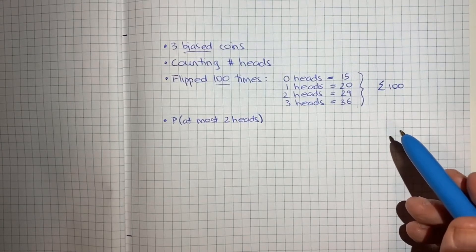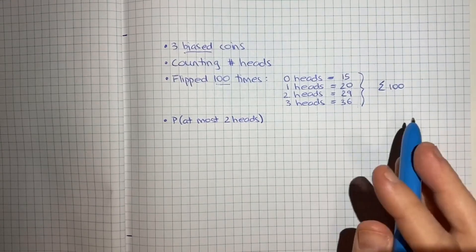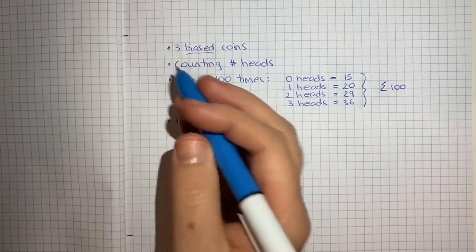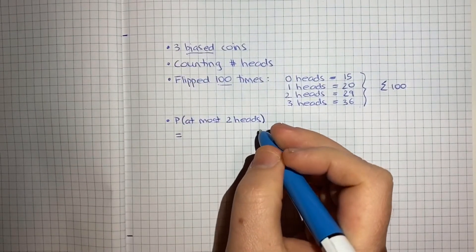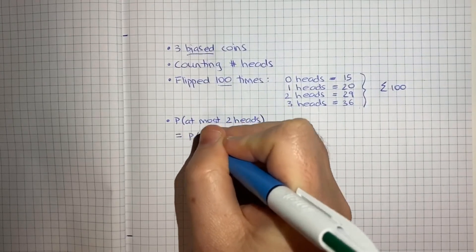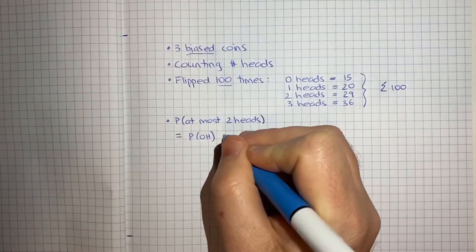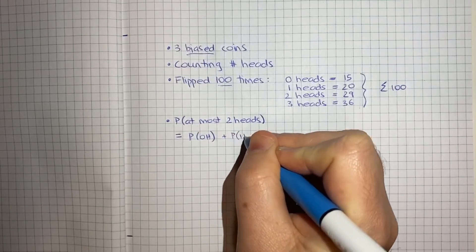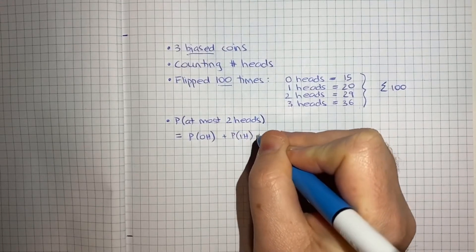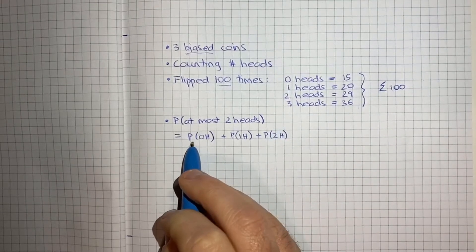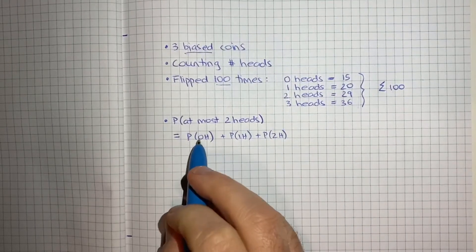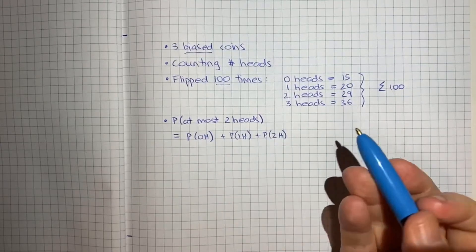And the way you can think about that, there's a few ways you could break it down. You could start by saying, the way you can get at most two heads is you could get no heads, you could get one head, or you could get two heads. That's the way you can get at most two heads. And you could add up those three probabilities and that will give you your answer.